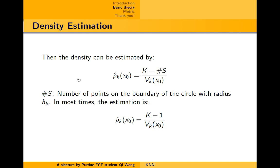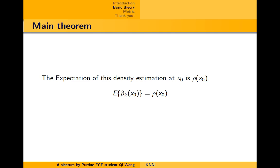So, then the density can be estimated by this. And the S here is the number of points on the boundary of the circle with radius h_k. In most times, the estimation is this. Because the number of points on the boundary of the circle, which is S, converges to 1 very quickly with probability 1.